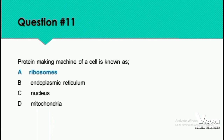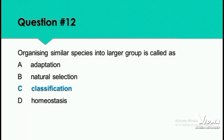Question 11: The protein-making machine of a cell is known as — ribosome, endoplasmic reticulum, nucleus, or mitochondria? The protein-making machine is the ribosome. Ribosomes are basically concerned with the production of proteins. Question 12: Organizing similar species into a larger group is called classification.